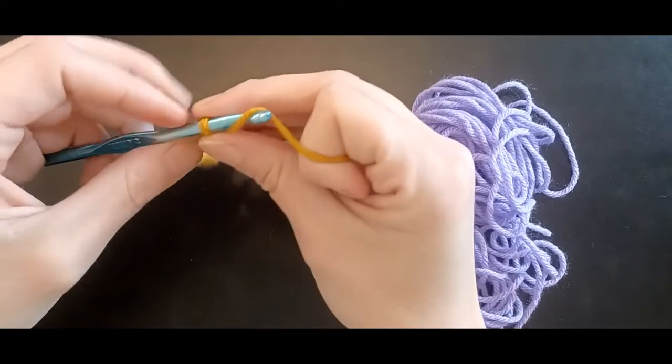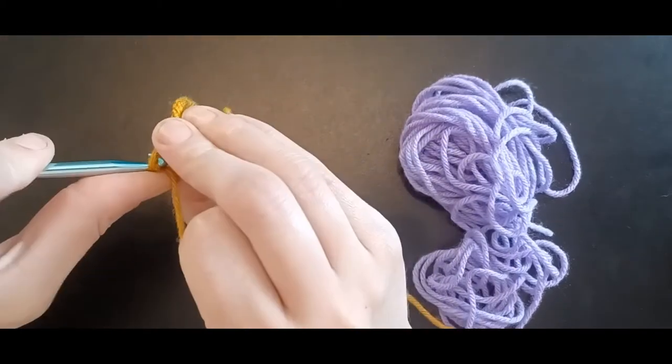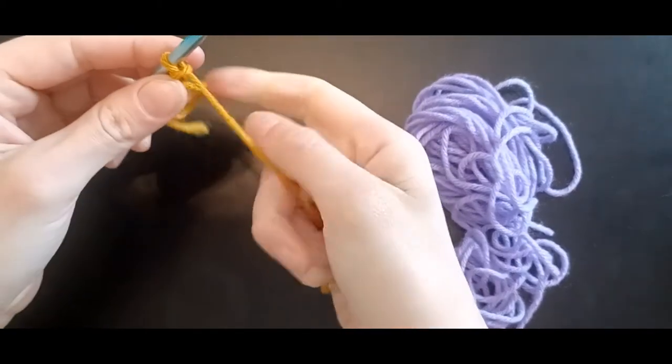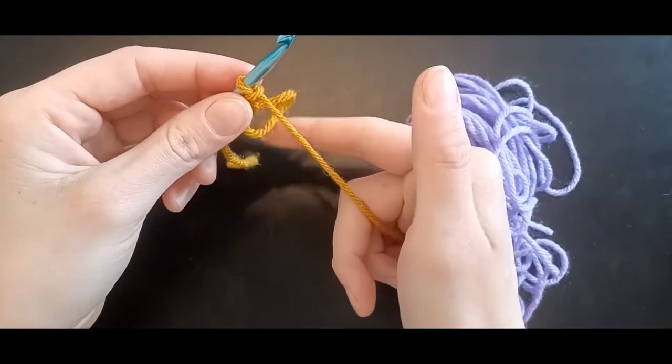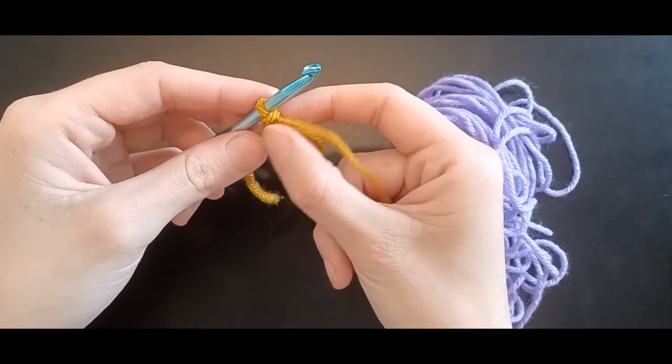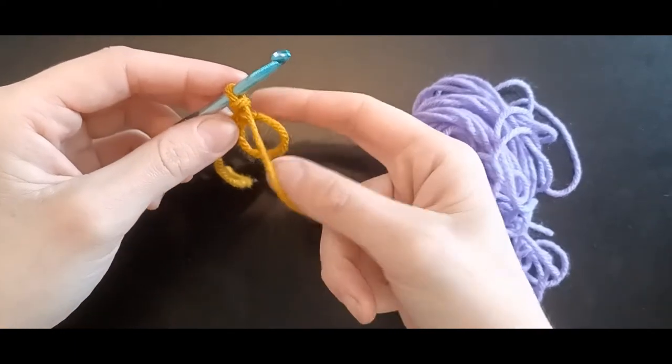So you have your magic ring. You're going to chain one more, and then you're going to do nine single crochets in the circle. So including this chain you just made, you'll have ten total stitches.